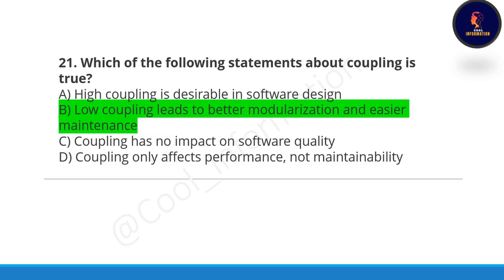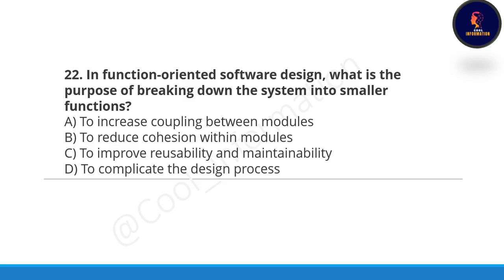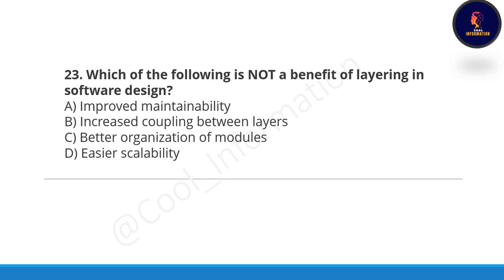High cohesion and low coupling should be there for better software design — keep this point in mind. High cohesion means cohesion should be high, and coupling should be low. Next question: in function-oriented software design, what is the purpose of breaking down the system into smaller functions? Option C is correct — to improve reusability and maintainability.